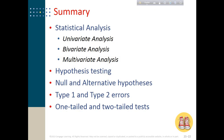In this chapter we have covered different statistical analyses: univariate, bivariate, and multivariate analysis. We learned about hypothesis testing, Type I and Type II errors, one-tailed and two-tailed tests, and we also learned about the chi-square test. Thank you very much.